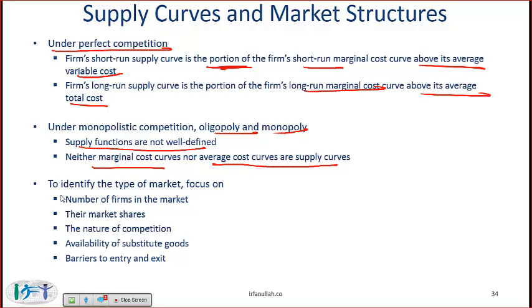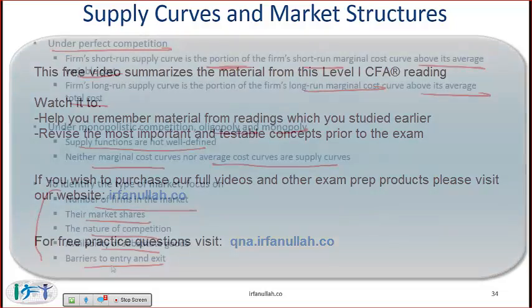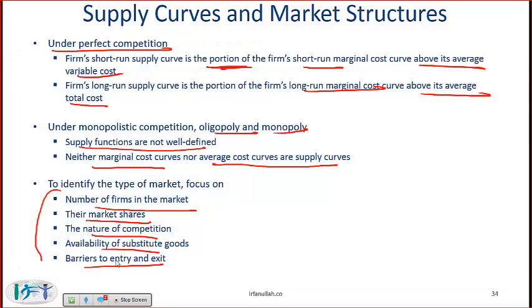To identify the type of market, look at these factors: the number of firms — lots of firms lean toward perfect competition; market shares — very low shares lean toward perfect competition, high shares suggest oligopoly; nature of competition — purely price-based suggests perfect competition; availability of substitutes — lots of substitutes suggests perfect competition, substitutes with some differentiation suggests monopolistic competition; and barriers to entry — low barriers suggest perfect competition, high barriers suggest oligopoly or monopoly.